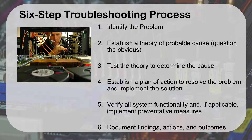The first step is to identify the problem. Next, we establish our theory of probable cause — basically question the obvious. Then we test that theory to determine if it was the cause. We establish a plan of action and resolve the problem, implement a solution. We verify all system functionality and, if applicable, implement any preventive measures. Finally, we document our findings, actions, and outcomes.